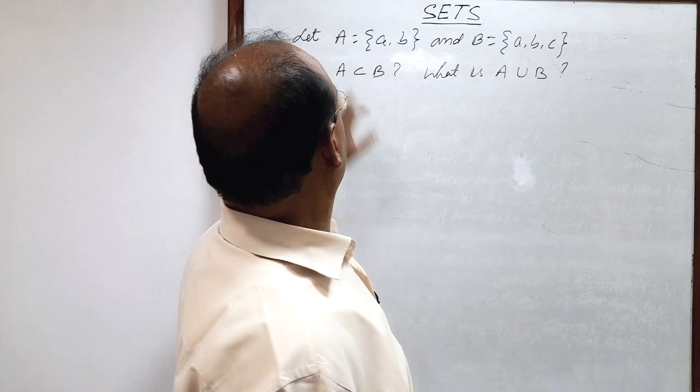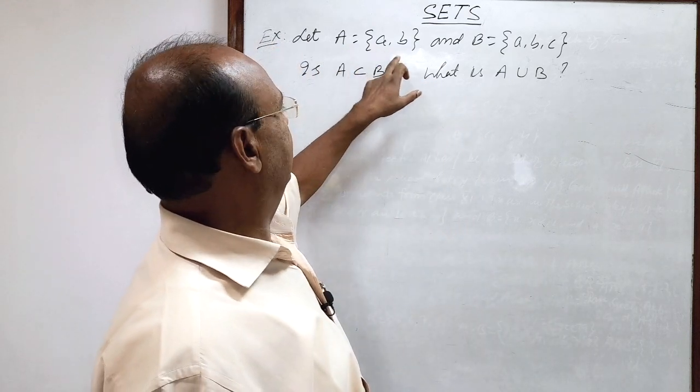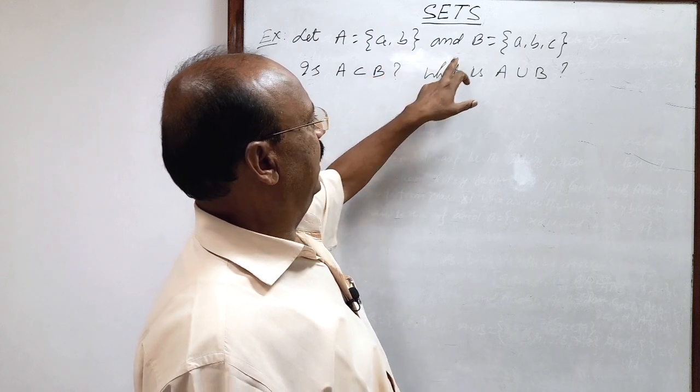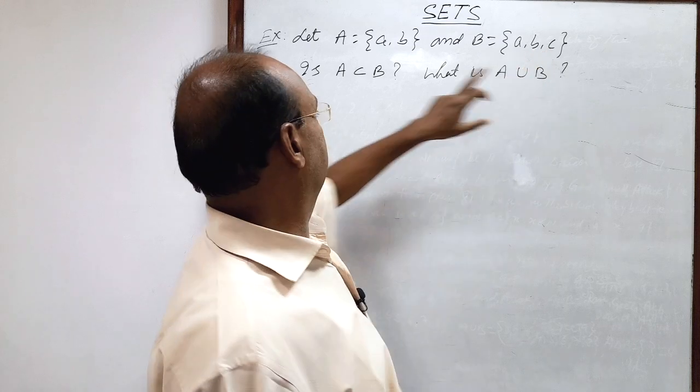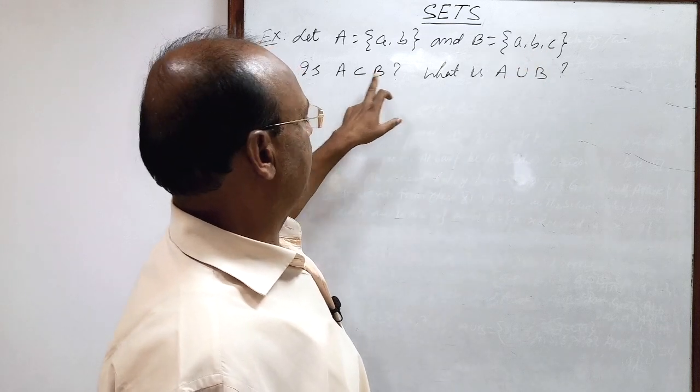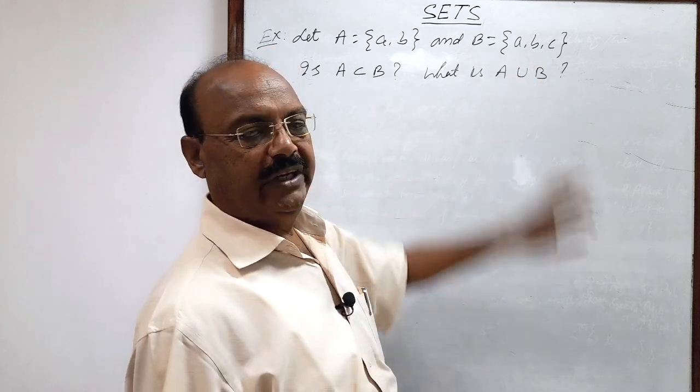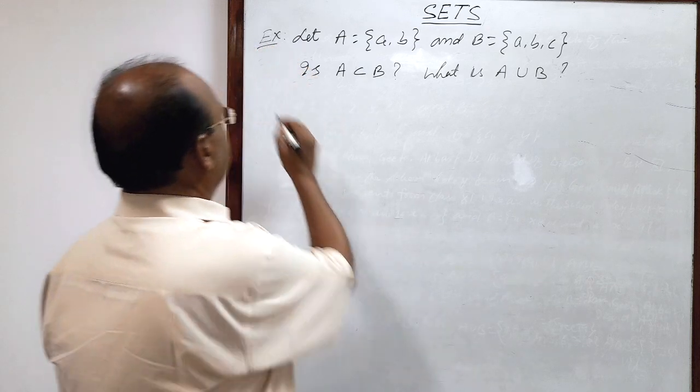The question is: let A be a set having elements a, b and B be a set having elements a, b, c. Is A a subset of B? And what is A union B? Let us see the solution.